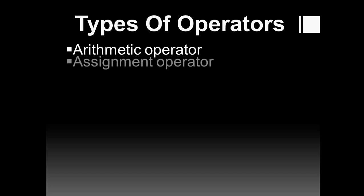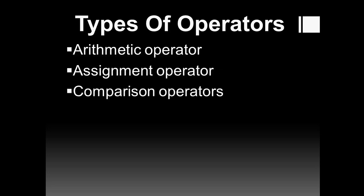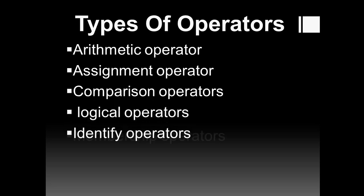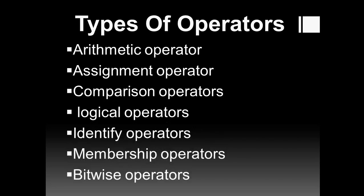The main types of operators are: arithmetic operator, assignment operator, comparison operator, logical operator, identity operator, membership operator, and bitwise operator. These are the operators used in Python.